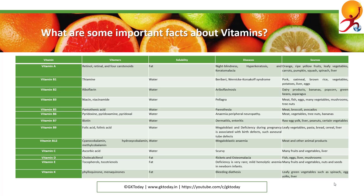Vitamin E includes tocopherols and tocotrienols. It is soluble in fat. Deficiency is rare but can cause mild hemolytic anemia in newborn infants. It can be found in many fruits, vegetables, nuts, and seeds.